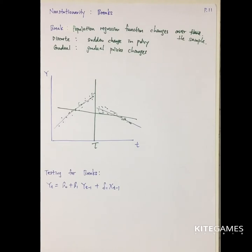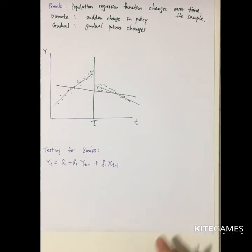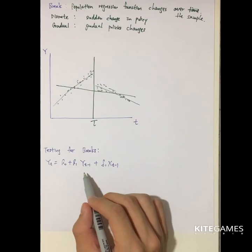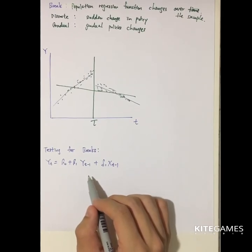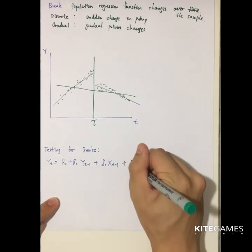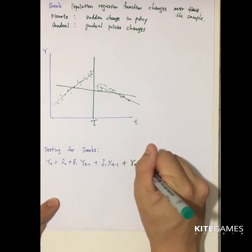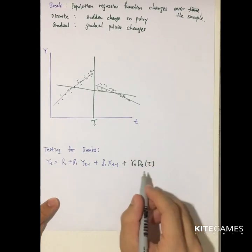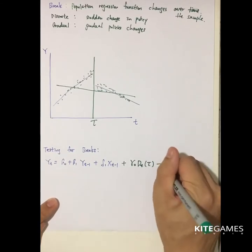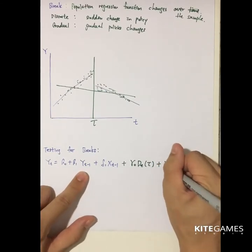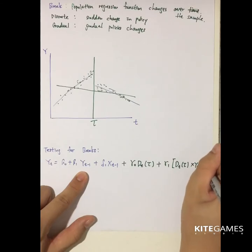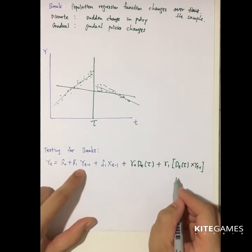To test whether there is a break, you start with the original ADL model and add some variables. You need to add gamma_0 times the dummy variable D_T at time tau to test whether there is a break at time tau. Apart from the intercept term, you also need to test gamma_1 times D(tau) times Y_{t-1} to see whether there is a change in the coefficient of Y_t.